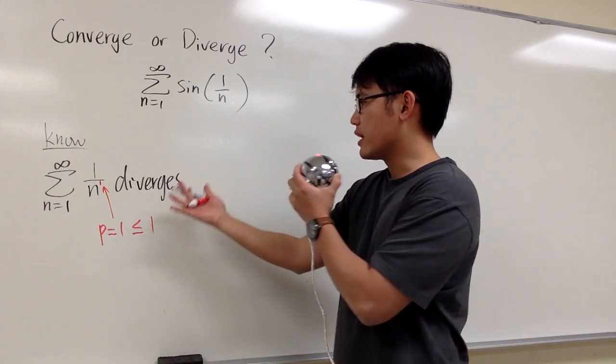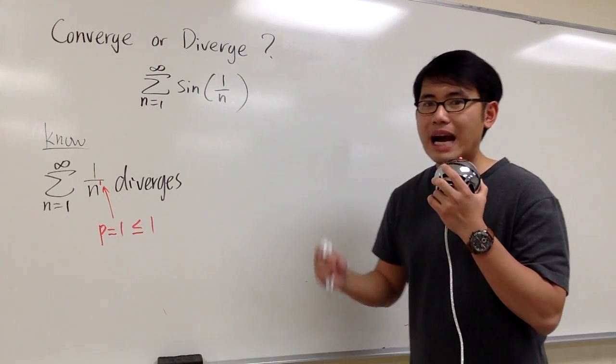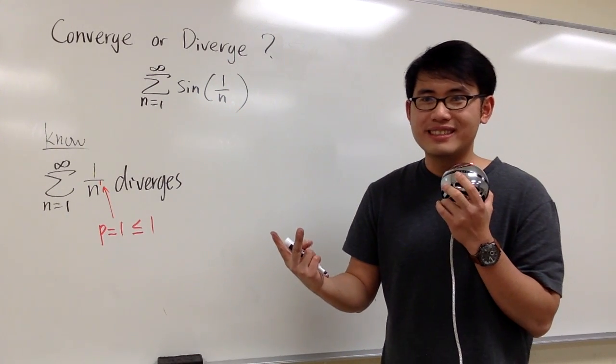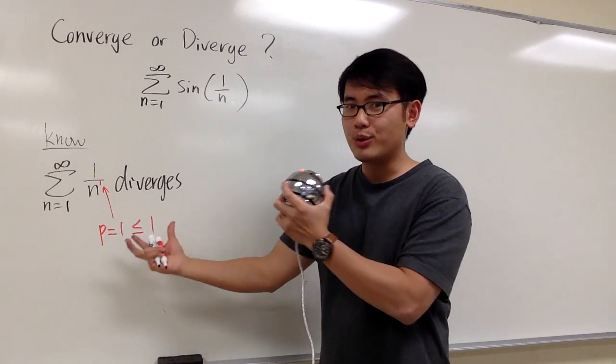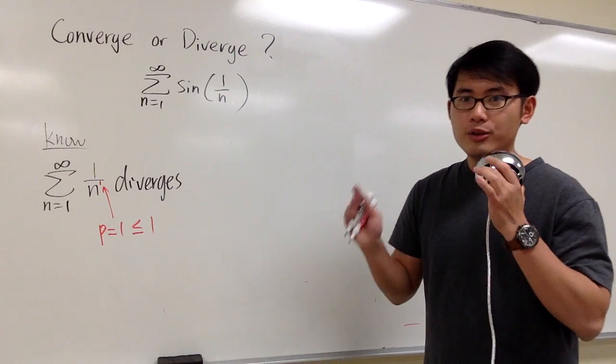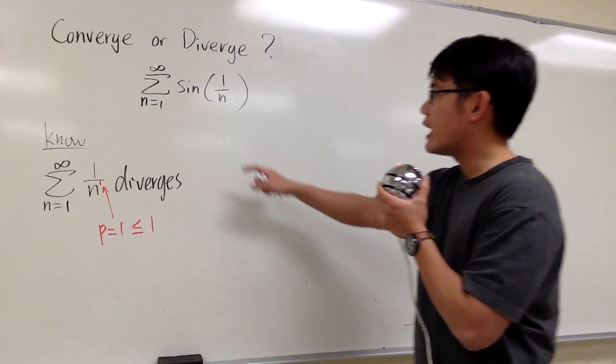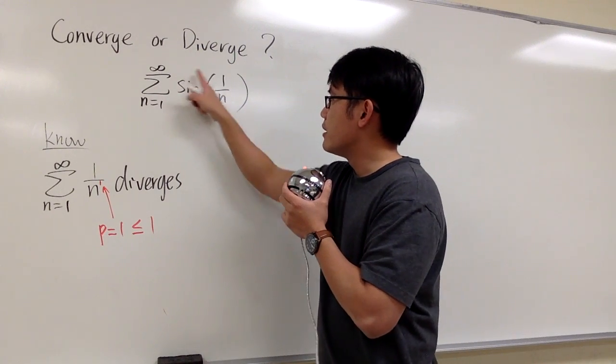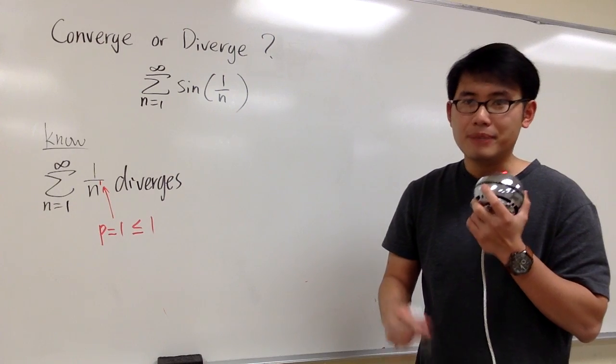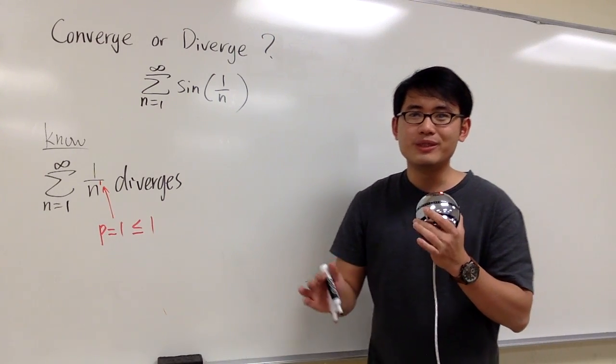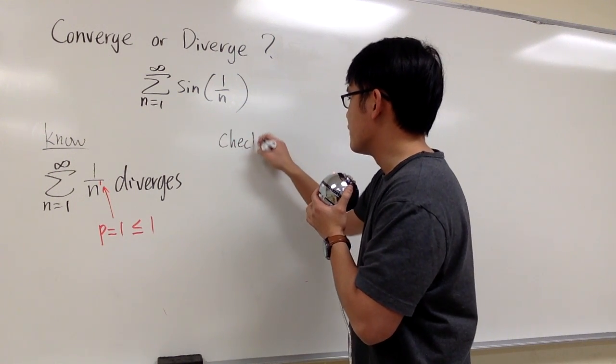And now, how can we make a connection between something that we know versus something that we want to make a conclusion with? We have two kinds of comparison tests that we can possibly use. Whenever you can come up with something that you know, and then you can use it quickly, let's use the comparison test. But we have two versions of that. Either we show that the sine of 1 over n is bigger than a divergent, that's the direct comparison test. But I think, in many cases, we like to use the limit comparison test much better. So in that case, we just check the following.